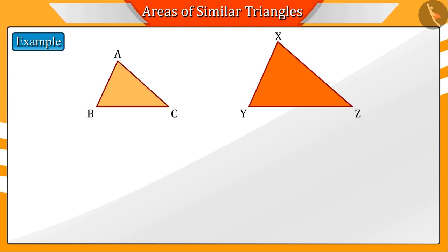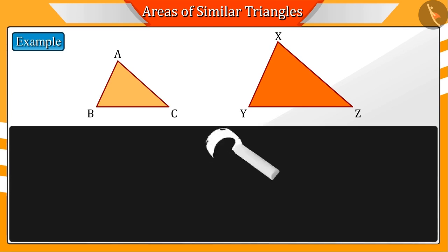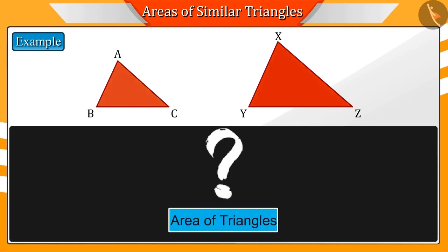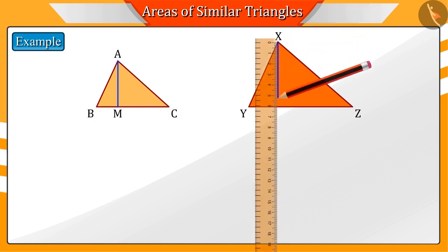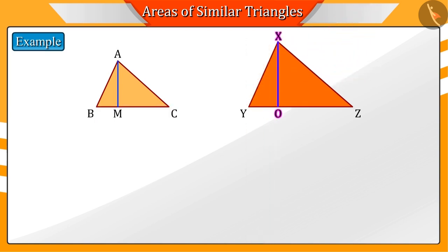Triangle ABC and triangle XYZ are two similar triangles. We have to find the relation between the ratio of the sides and the area. First of all, we will find the area of the triangles. Let us draw the altitude of both the triangles — that is, the altitude AM on the side BC and the altitude XO on the side YZ.